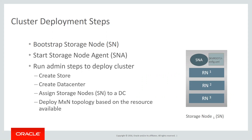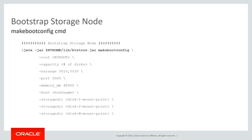Before we start the cluster deployment, let's look at a utility we provide to assist: the makebootconfig command. The root parameter points to the KV root. Capacity is the number of disks on the storage node. The HA range port, memory — the memory you want to allocate for the replication node (if you don't provide anything, the system automatically takes 80%). And then the hostname and storage node directory.